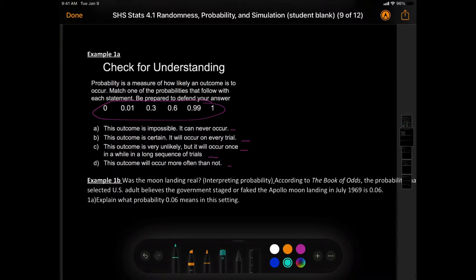Okay, if this outcome is impossible, it can never occur. That would be a what? Zero. If this outcome is certain, 100%, it will occur on every trial that is a one. This outcome is very unlikely, but it will occur once in a while in a long sequence of trials. I would say 0.01. And this outcome will occur more often than not. I think of those choices, that would be 0.6. So, I didn't use those two.